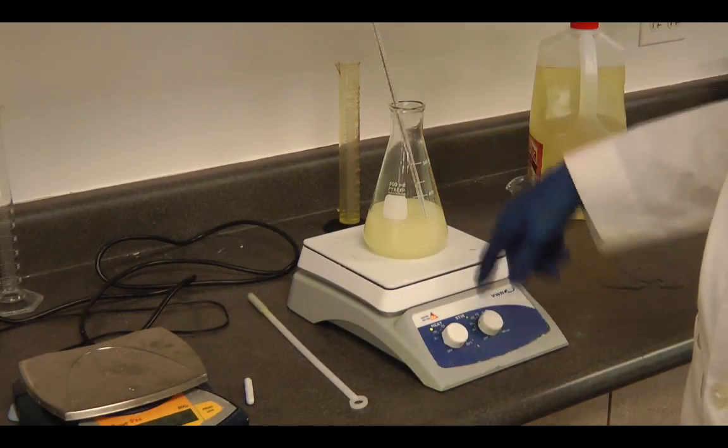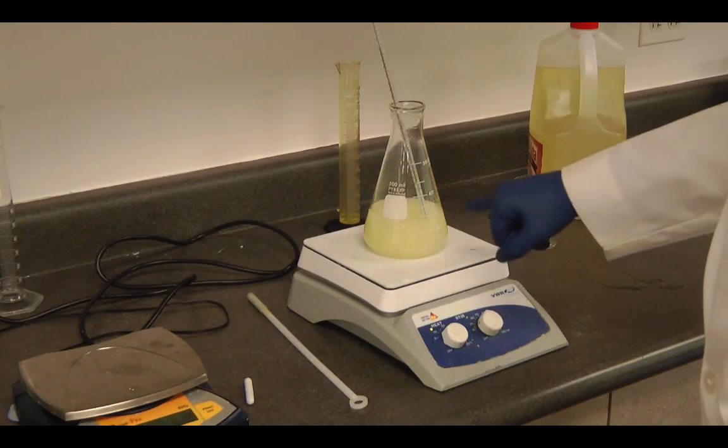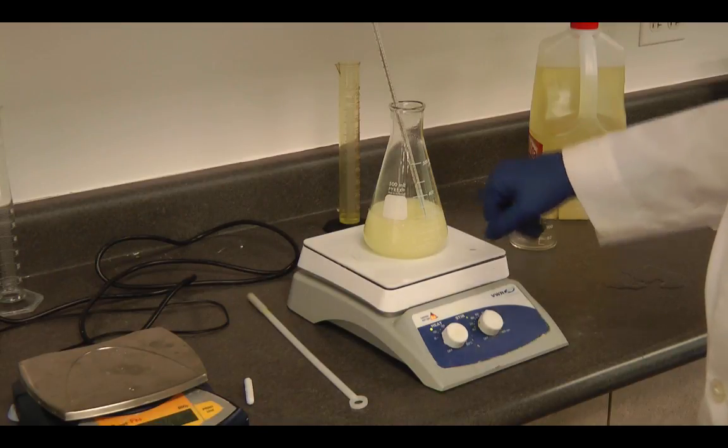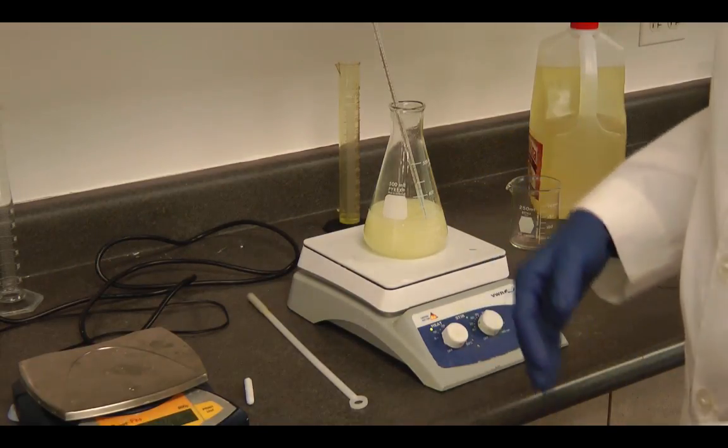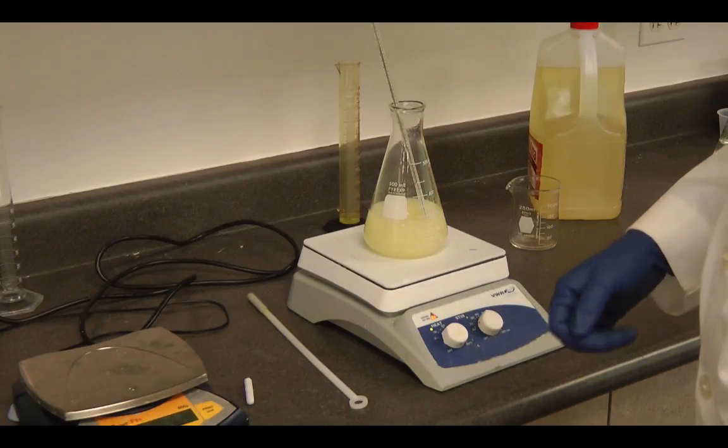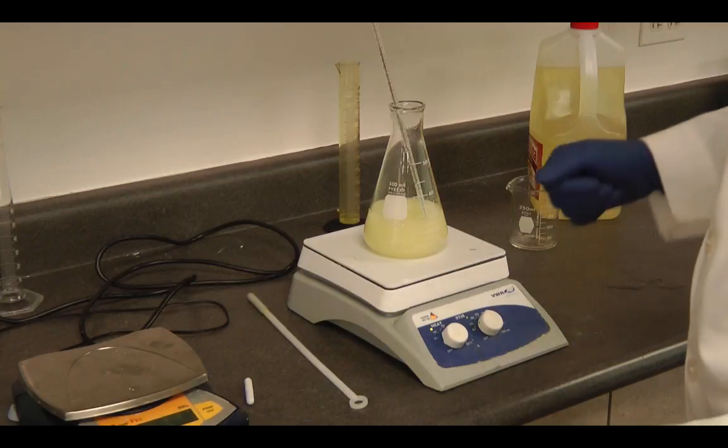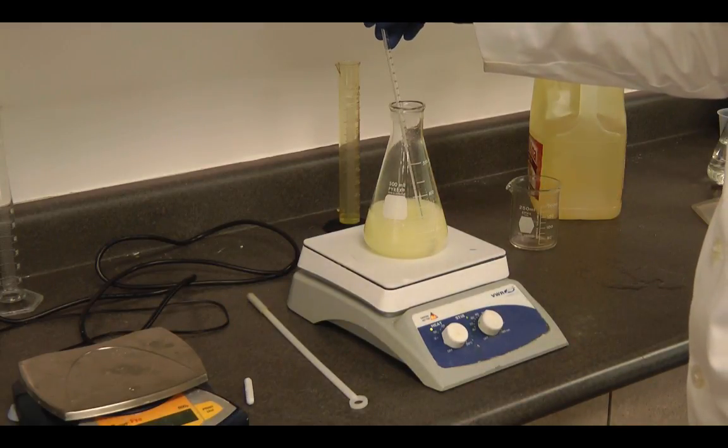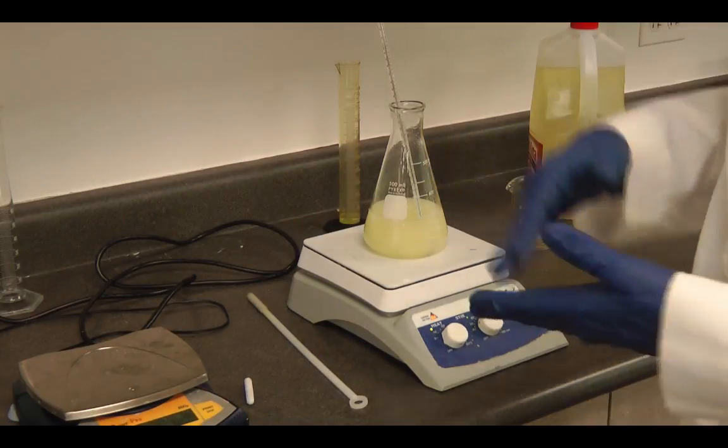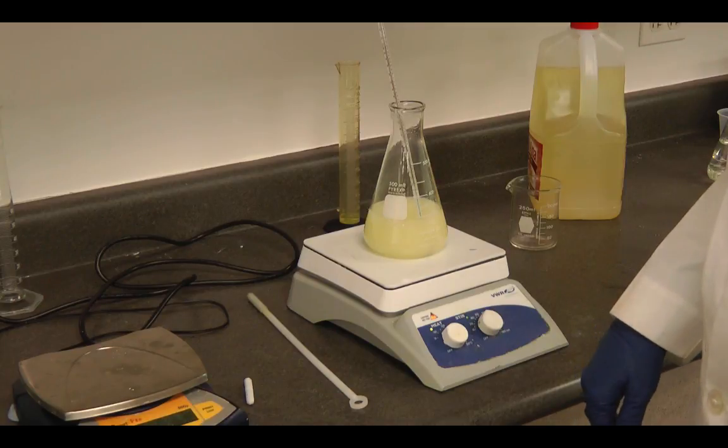This reaction needs to proceed over about a half an hour's time. So we're going to keep it on the heated plate while it's stirring vigorously so that it can get good contact between the methoxide and the oil so the reaction can happen. And it needs about a half an hour for that reaction to proceed. So we'll go ahead and let this stir for a half an hour. In the meantime, we'll be careful to watch our temperature and make sure that it stays in that 55 to 65 degrees C range.